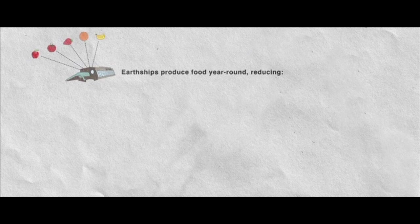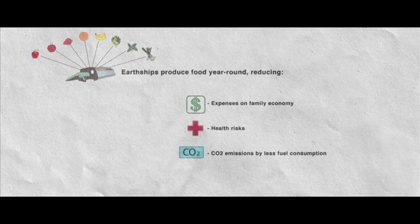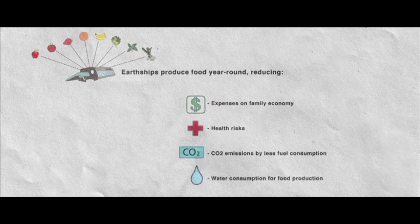Earthships produce food year-round, reducing expenses in family economy, health risks associated to pesticides and contaminants where food is grown, CO2 emissions by less fuel consumption, for example transportation for food imports, and water consumption for food production.